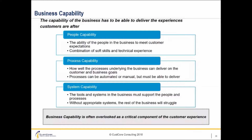The last one is system capability. These are the tools and systems of the company and how well they support the people and processes to achieve the customer and business goals. From what I've seen in lots of examples, systems often hinder the people and processes rather than help, and it's one of the major gaps and issues that companies have.